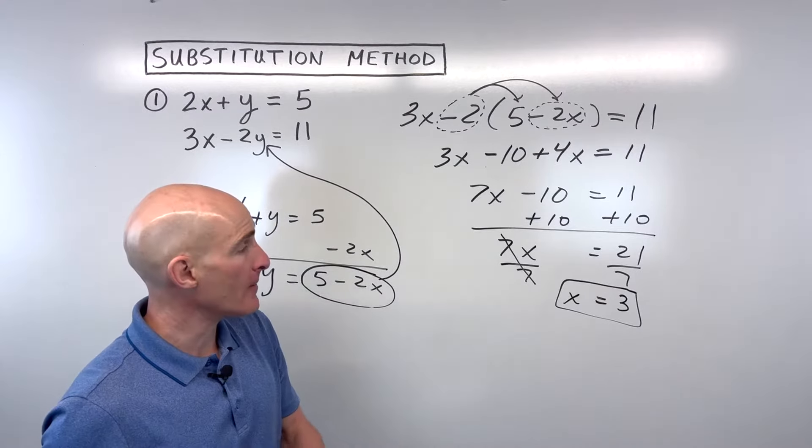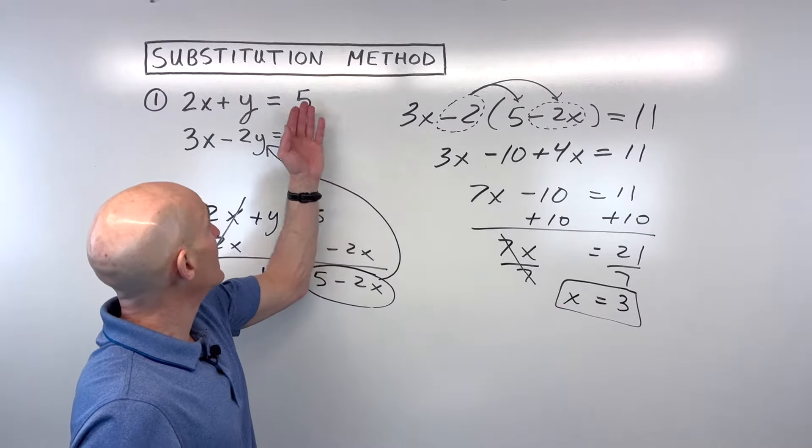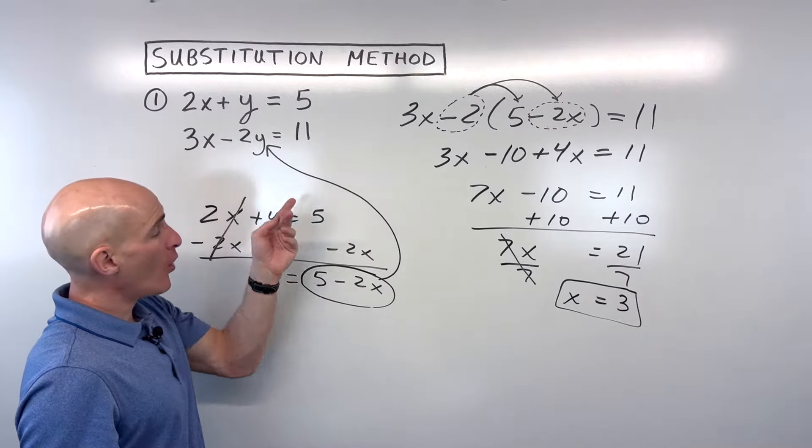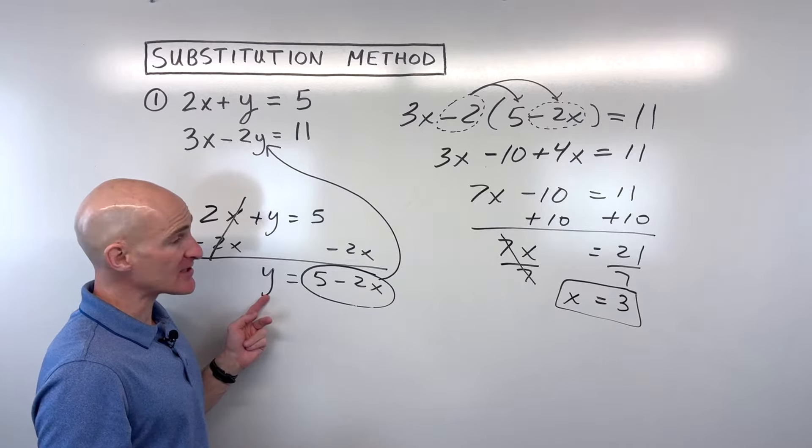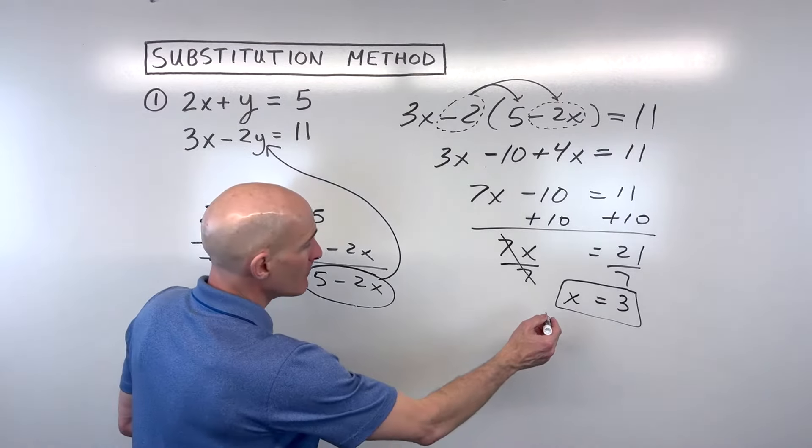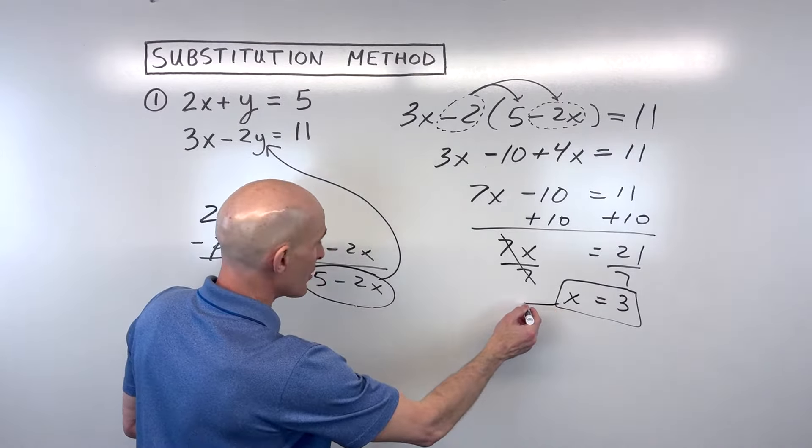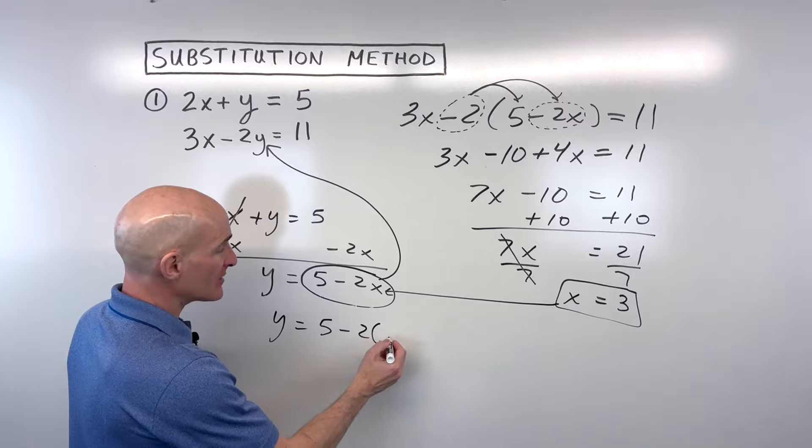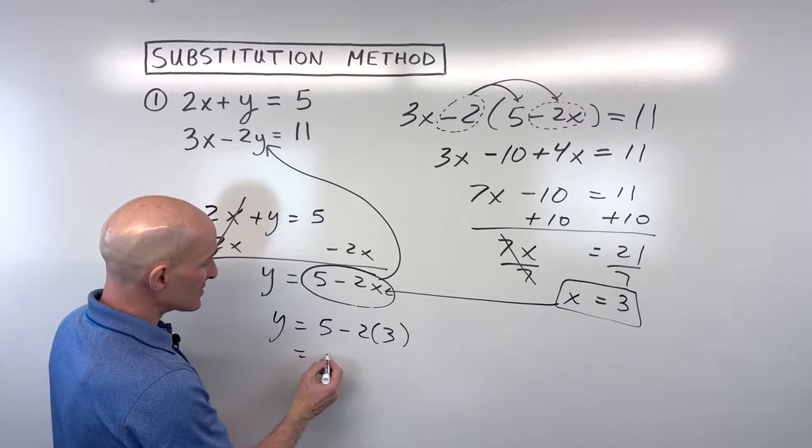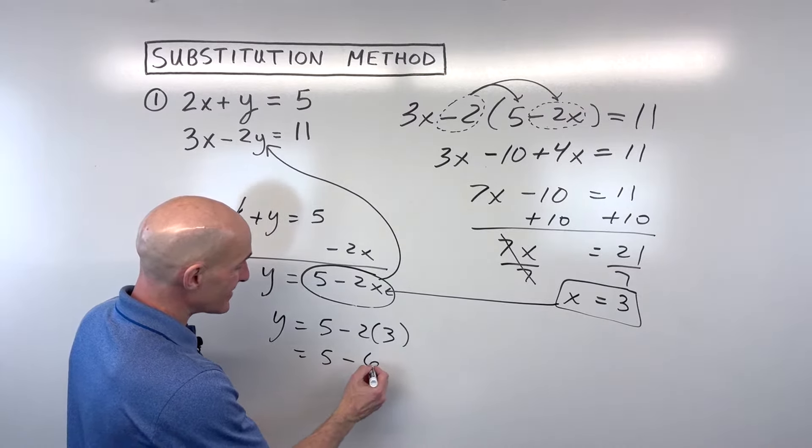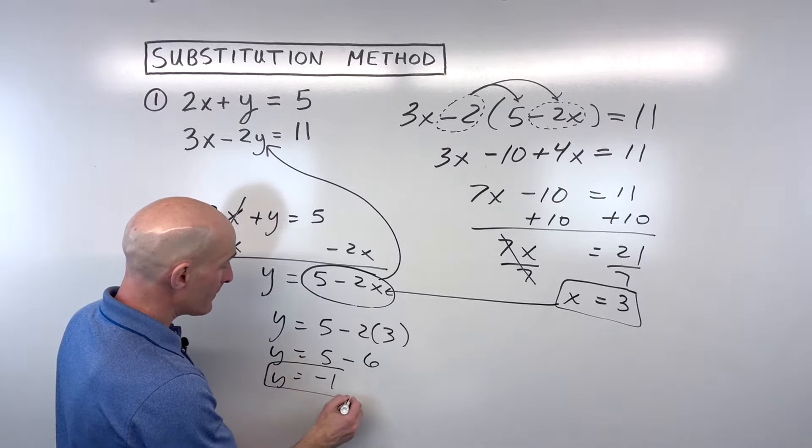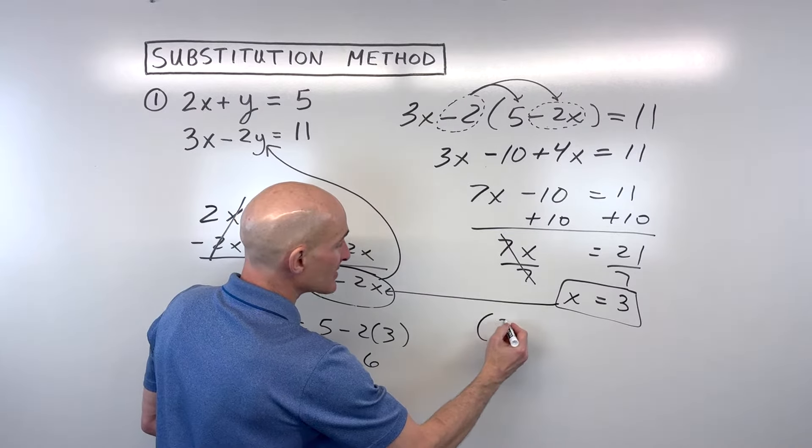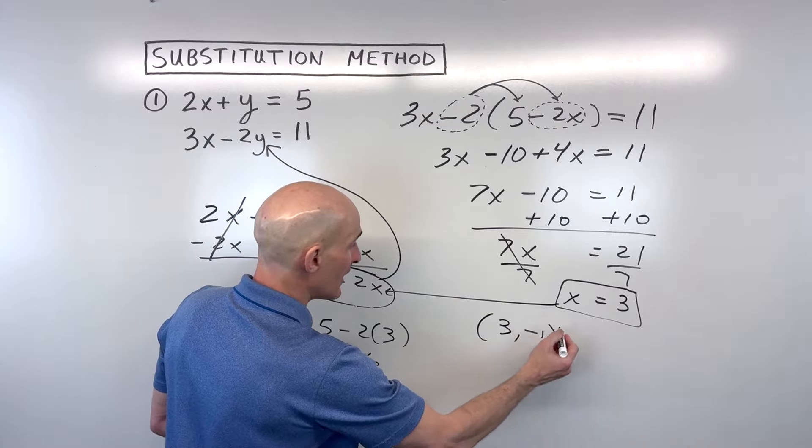How do we solve for y? You can put it back into either of these equations in place for x, or this one here, which might be easier because we already have y by itself. Any one of the equations, you'll get the same answer. Let's make it easier on ourselves. Let's put it in for x right here. So we have y equals 5 minus 2 times 3. So this is coming out to 5 minus 6, which is equal to negative 1. And so our final answer is going to be x comma y, 3 comma negative 1.